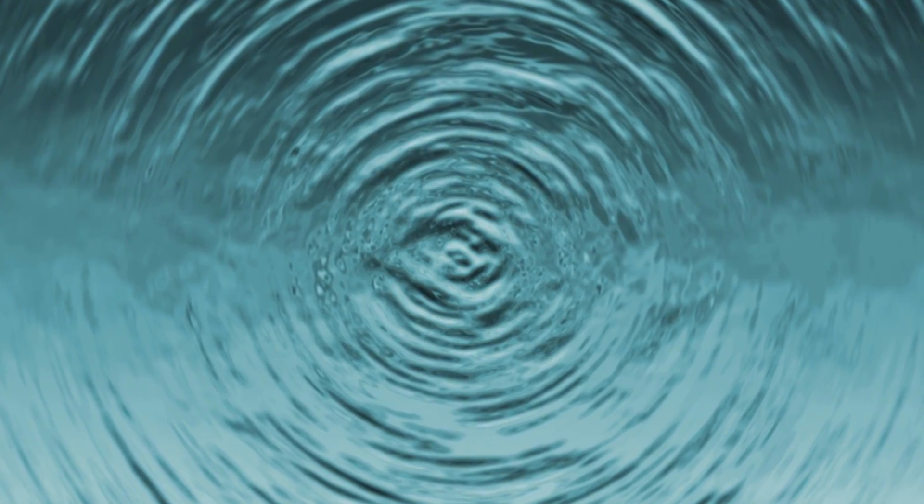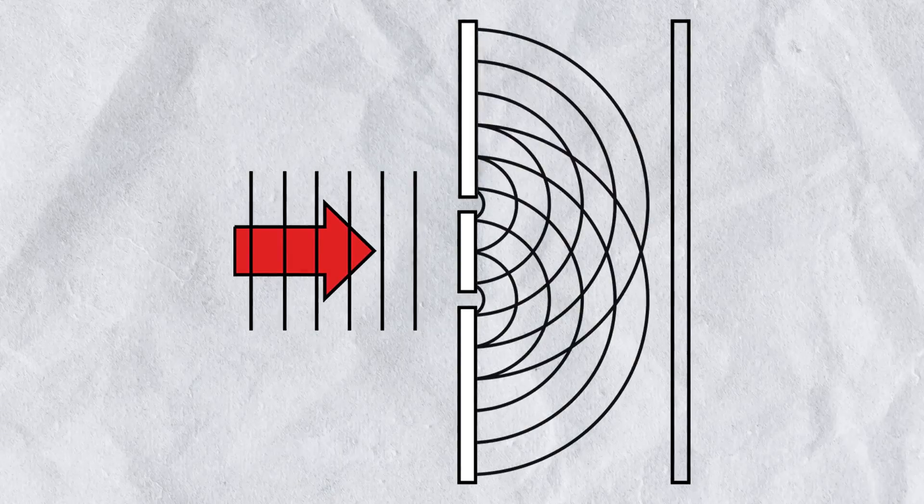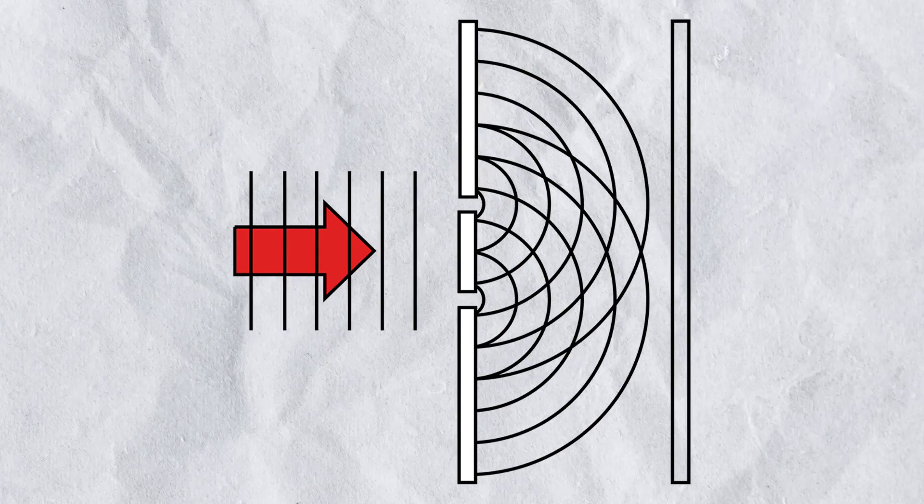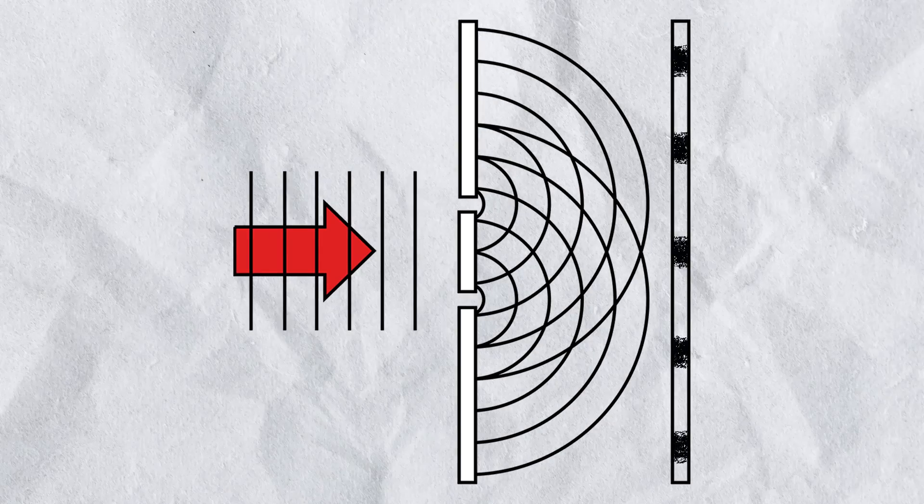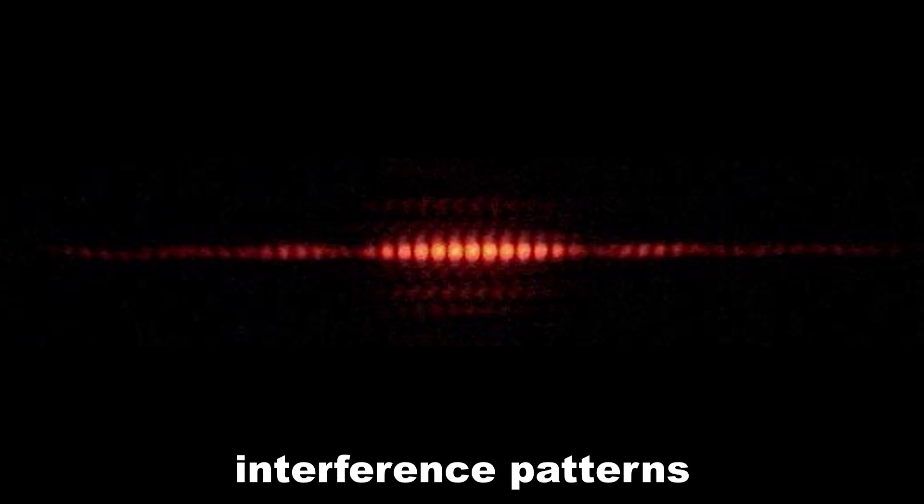If we do this experiment with waves, they pass through both slits and interfere with one another as they overlap, drawing bright and dark fringes on the wall which looks somewhat like a barcode. These are called interference patterns.